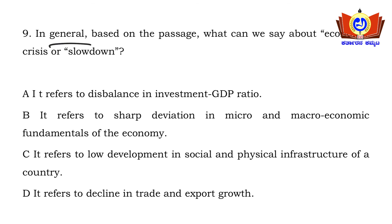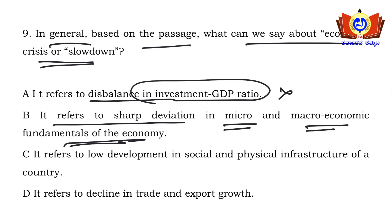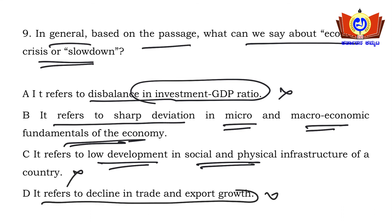Question: In general, based on the passage, what can we say about economic crisis or slowdown? Option A: it refers to disbalance investment — wrong. Option B: it refers to sharp deviation in micro and macro economic fundamentals of the economy — most probable. Option C: low development in social/physical infrastructure — wrong. Option D: declining — wrong. So option B is the most probable answer.